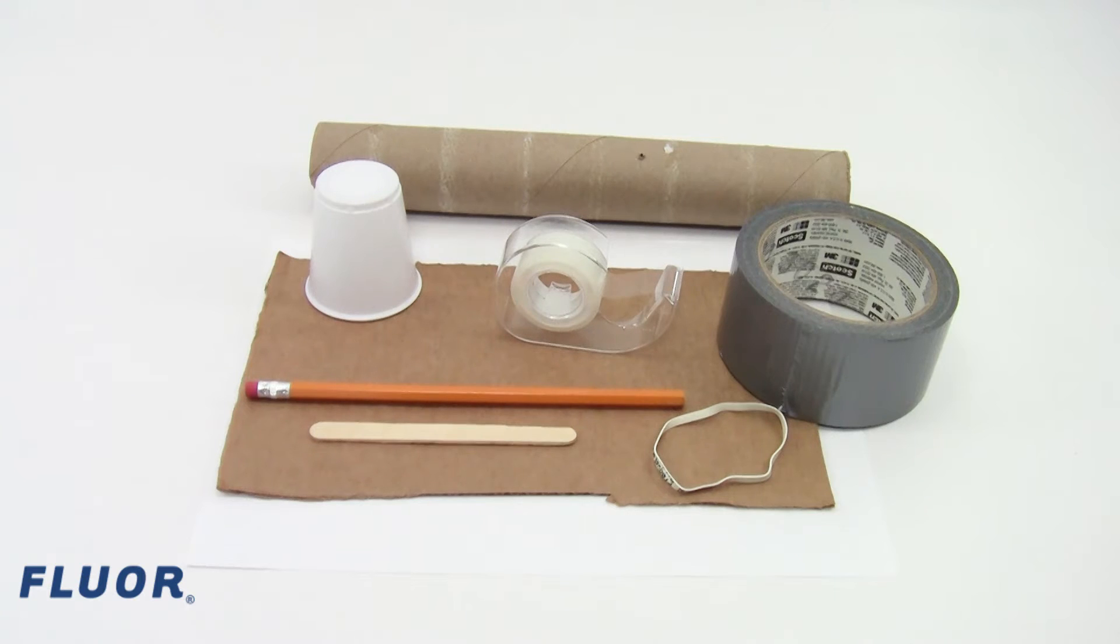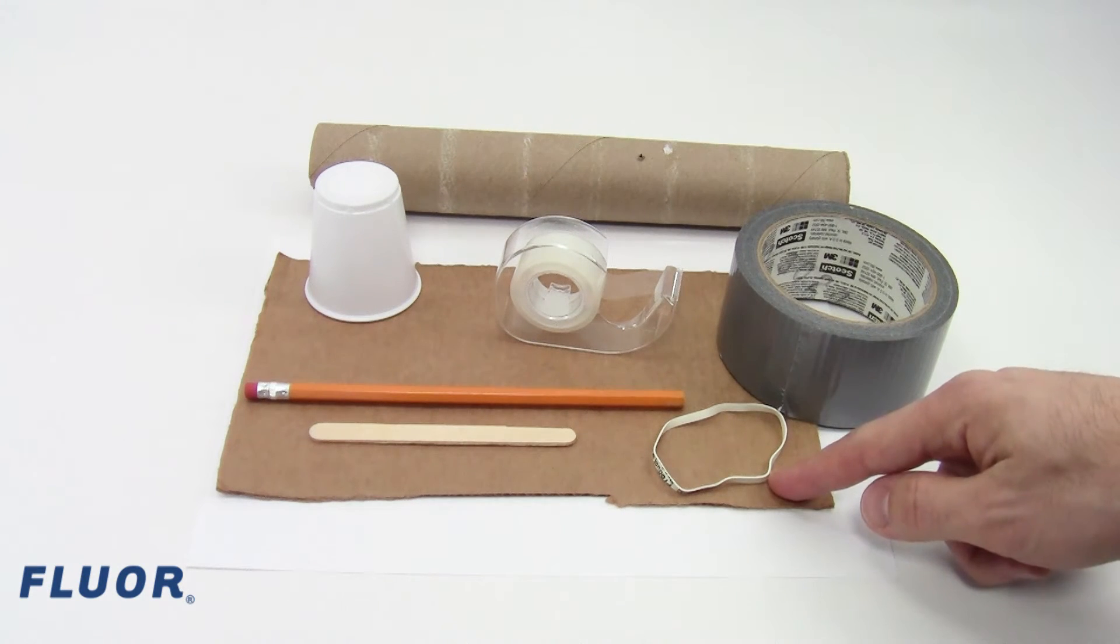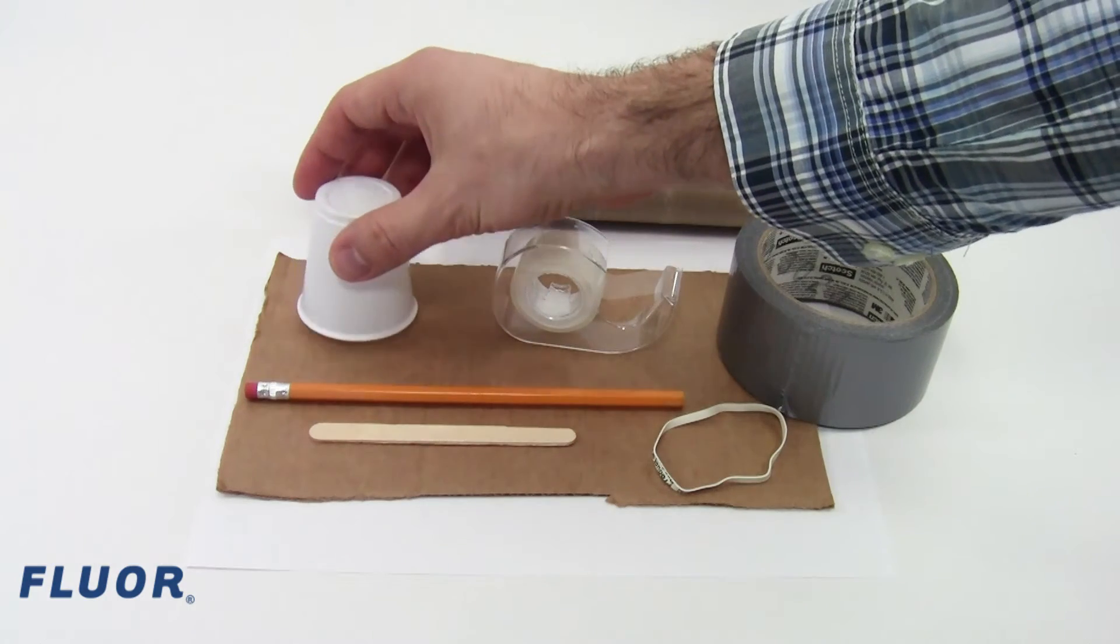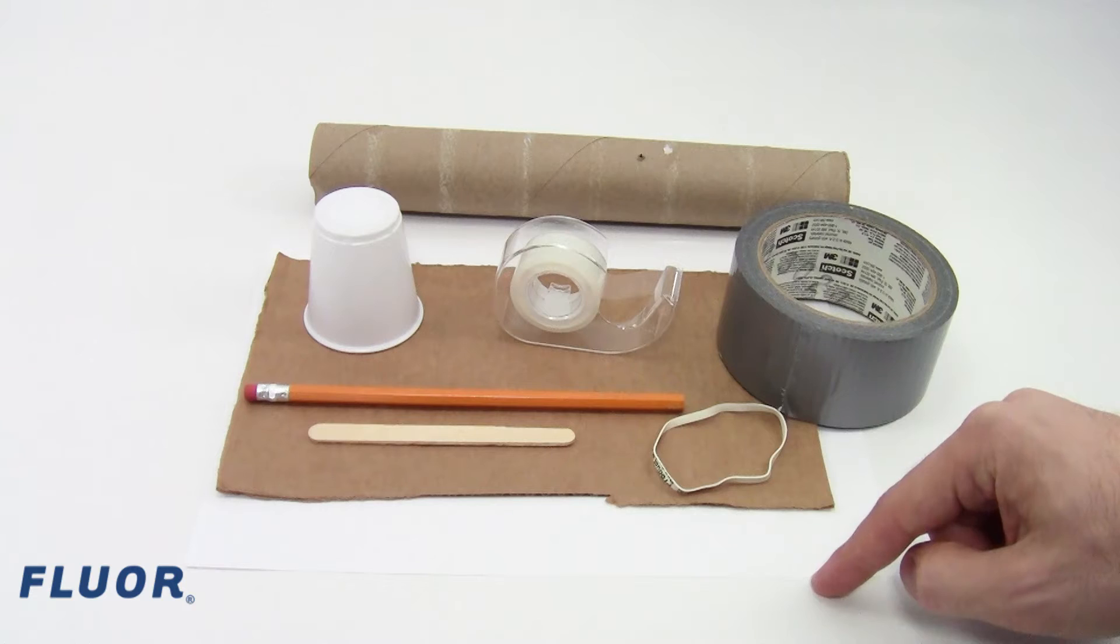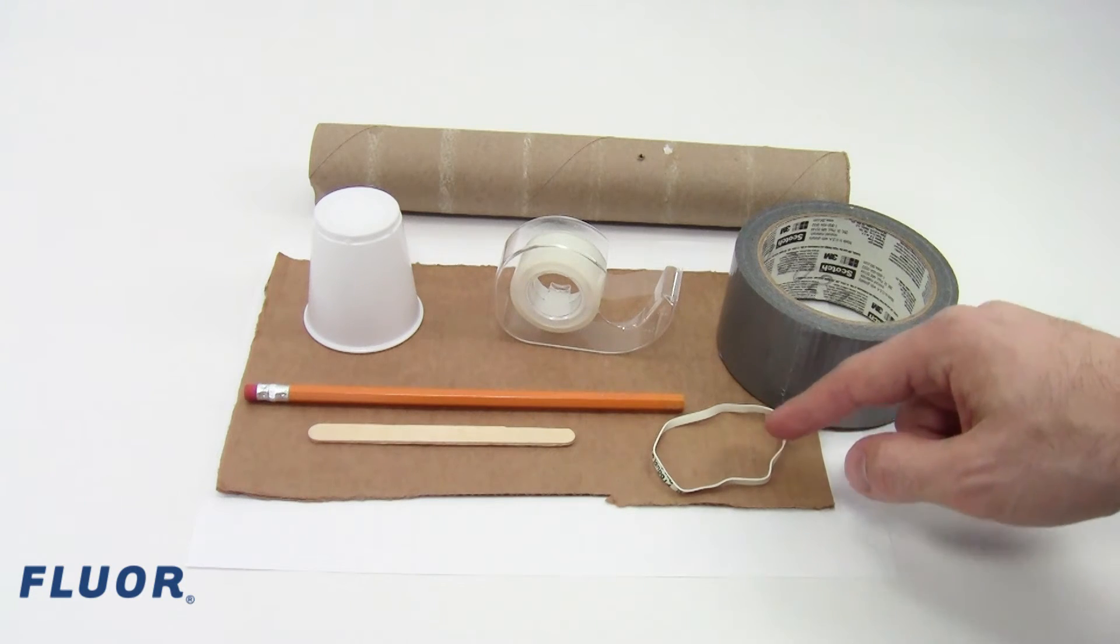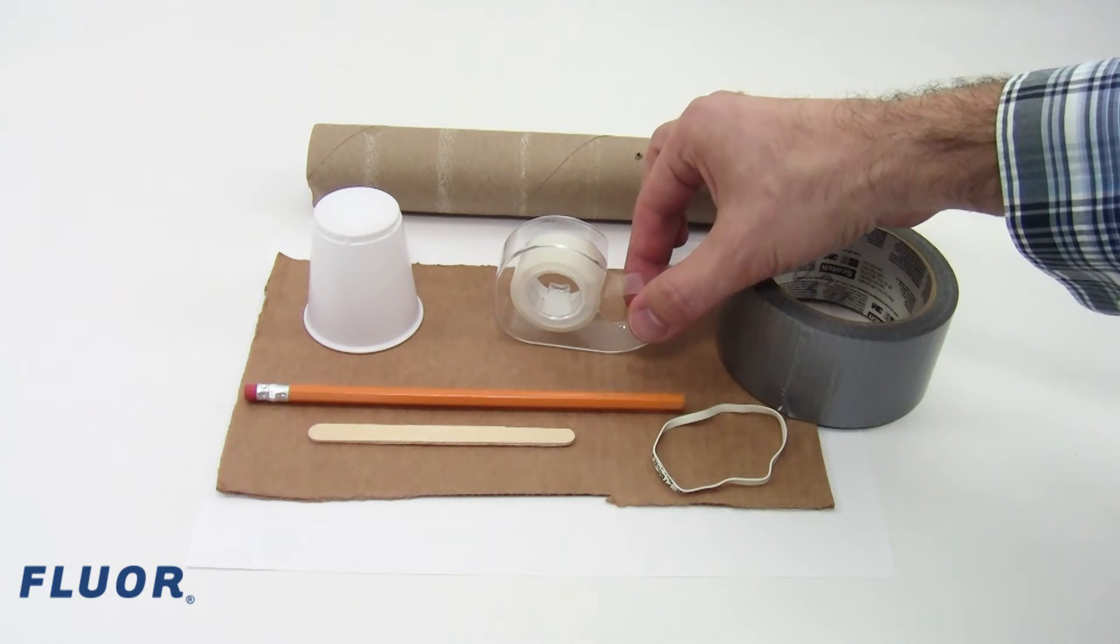You must build your machine using only items on the approved materials list: cardboard, 2 ounce paper or plastic cups, wooden craft sticks, wooden pencils, printer paper, rubber bands, cardboard tubes, clear adhesive tape, and duct tape.